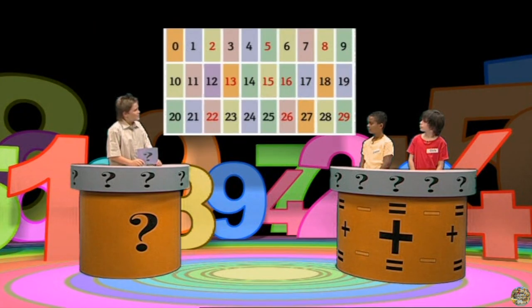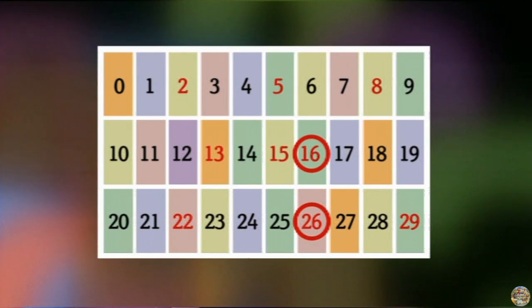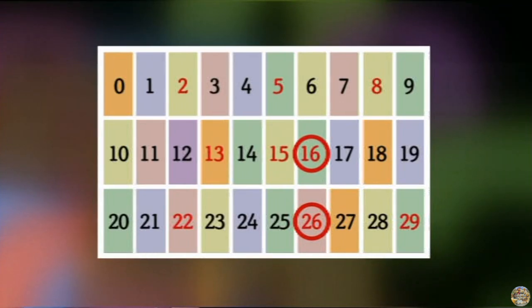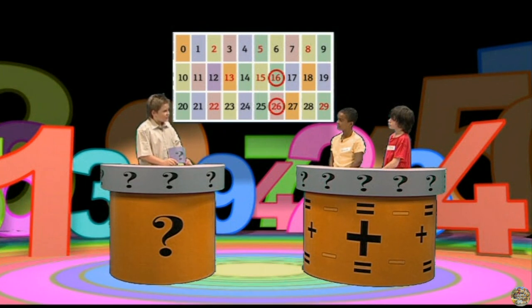Now, Chris, using the number rectangle, can you tell me a number that has a difference of ten — one number that is ten more than another number? Sixteen and twenty-six! Correct! But how do you know? Daniel, can you answer the question? Well, twenty-six is exactly underneath sixteen on the number rectangle, and that means it must be exactly ten more. Yes — twenty-six is ten more than sixteen.